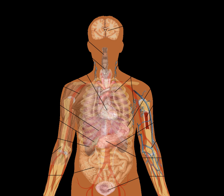The English word 'organism' is a neologism coined in the 17th century, probably formed from the verb to organize. At first the word referred to an organization or social system. The meaning of a living animal or plant is first recorded in 1842. The adjective visceral, also splanchnic, is used for anything pertaining to the internal organs.